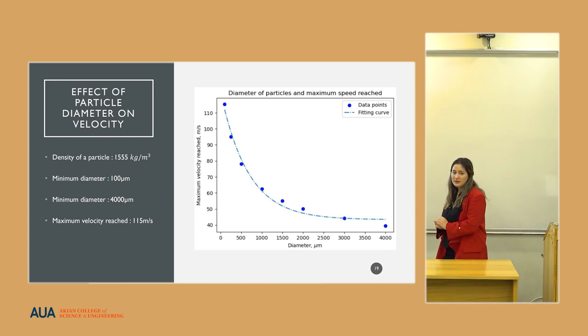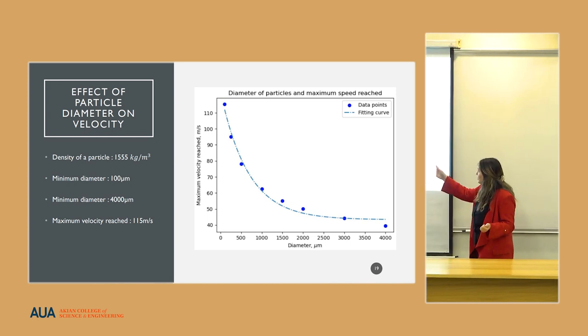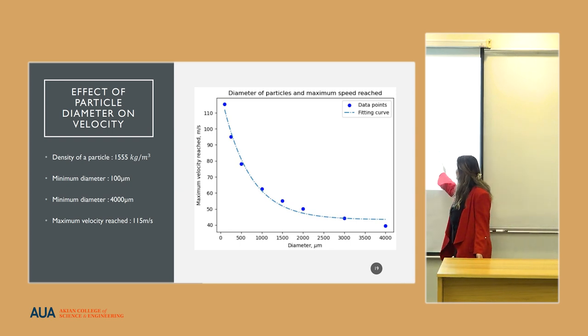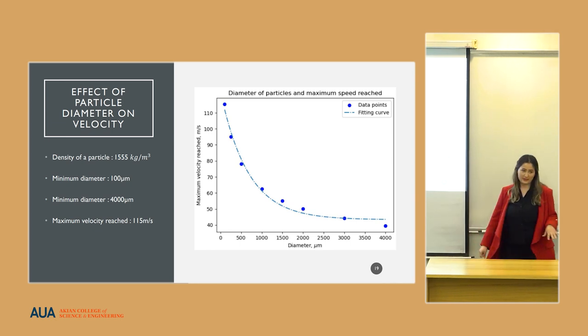To better understand how velocity is dependent on the size of the particle, we can see the plot representing their dependency. It is an exponential-like dependency, and as you can see, for bigger particles we have smaller maximum velocities inside the tunnel. For particle density, the range is from 100 to 4000 micrometers, and the maximum velocity which particles have is 115 meters per second. That's for the finest one.